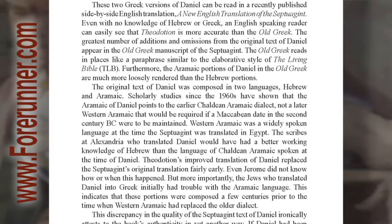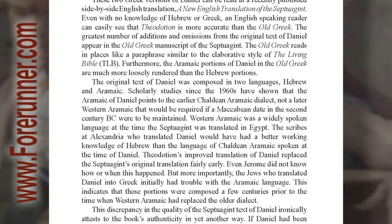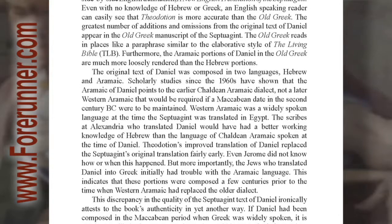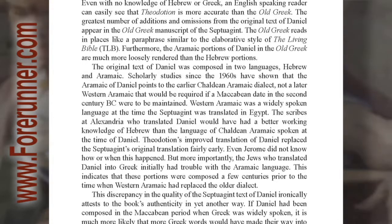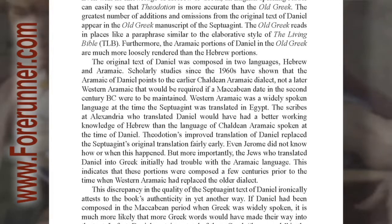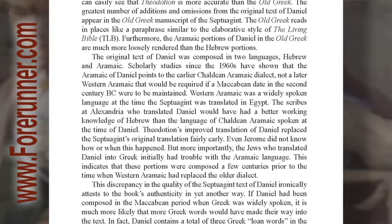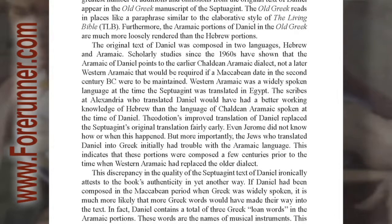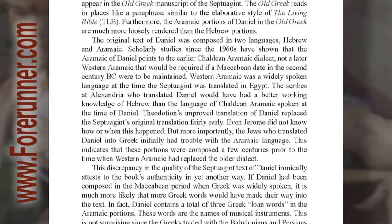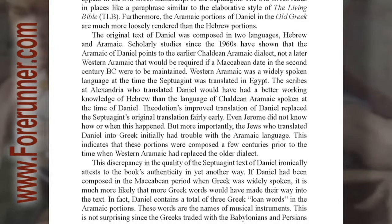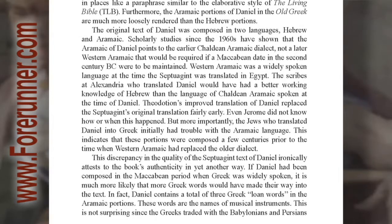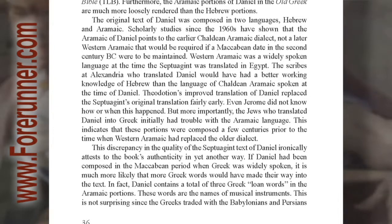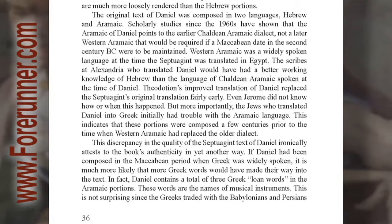The greatest number of additions and omissions from the original text of Daniel appear in the Old Greek manuscript of the Septuagint. The Old Greek reads in places like a paraphrase, similar to the elaborative style of the Living Bible. Furthermore, the Aramaic portions of Daniel in the Old Greek are much more loosely rendered than the Hebrew portions. The original text of Daniel was composed in two languages, Hebrew and Aramaic. Scholarly studies since the 1960s have shown that the Aramaic of Daniel points to the earlier Chaldean Aramaic dialect, not a later Western Aramaic that would be required if a Maccabean date in the 2nd century BC were to be maintained.